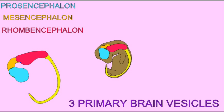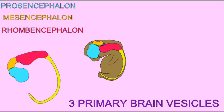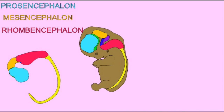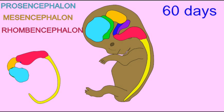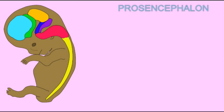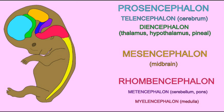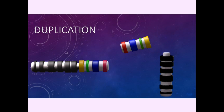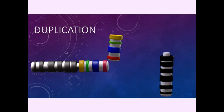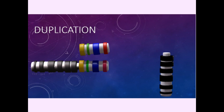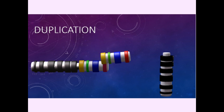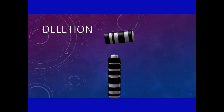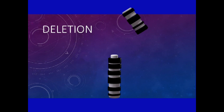For development to occur normally, not only are specific genes required, but the proper levels of these genes. And so therefore, if any genetic accidents, particularly chromosomal changes, cause duplications of sections of genes or deletions of chromosomal regions and their genes,